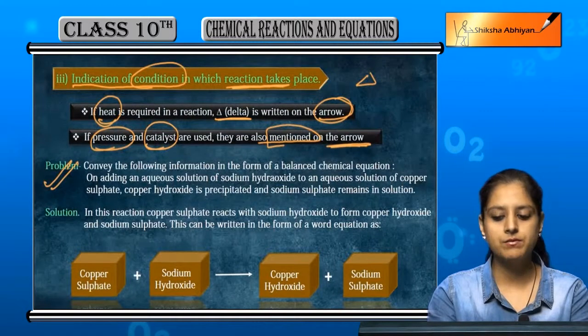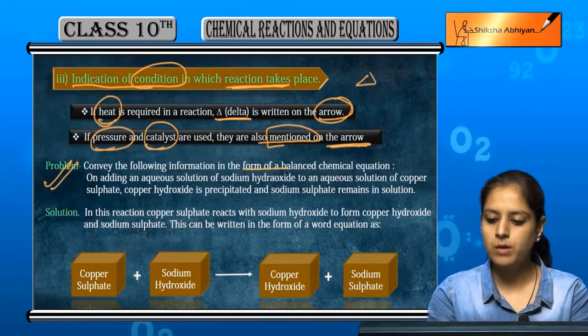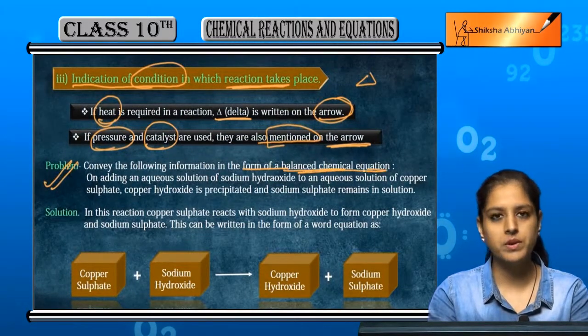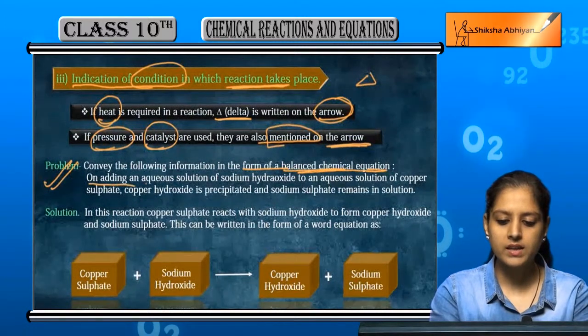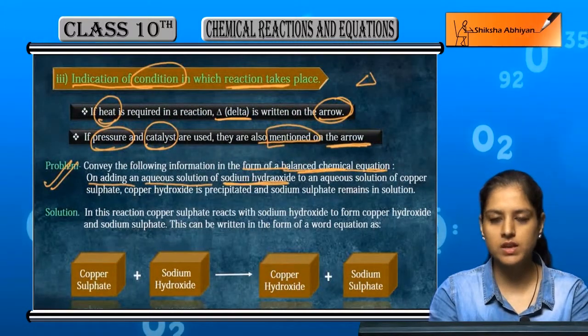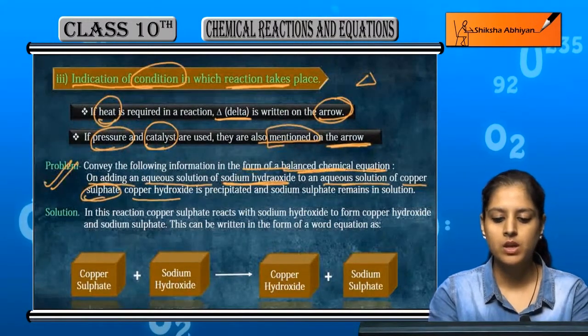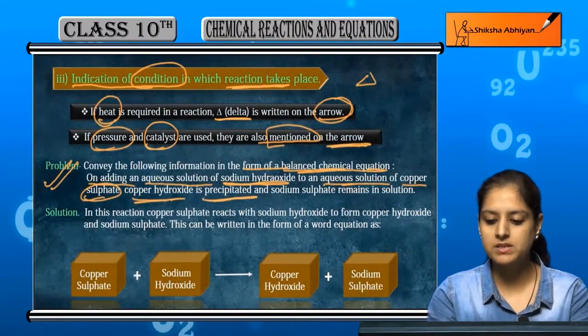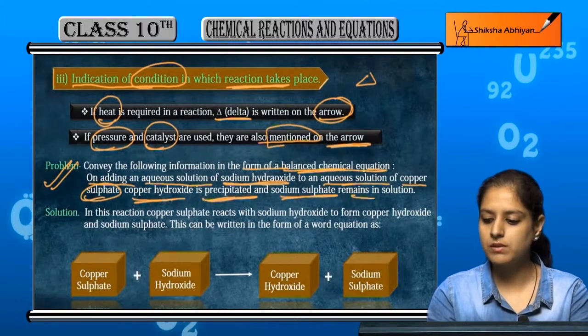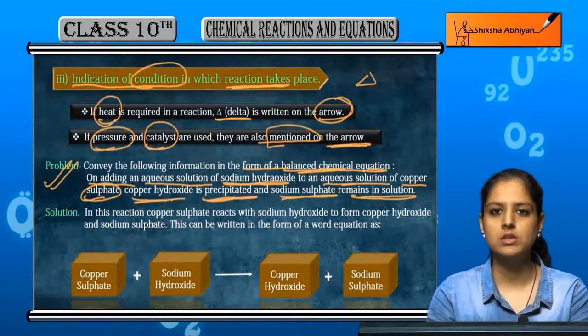For example, let us see a problem. Convey the following information in the form of a balanced chemical equation. On adding aqueous solution of sodium hydroxide to an aqueous solution of copper sulfate, copper hydroxide is precipitated and sodium sulfate remains in the solution.